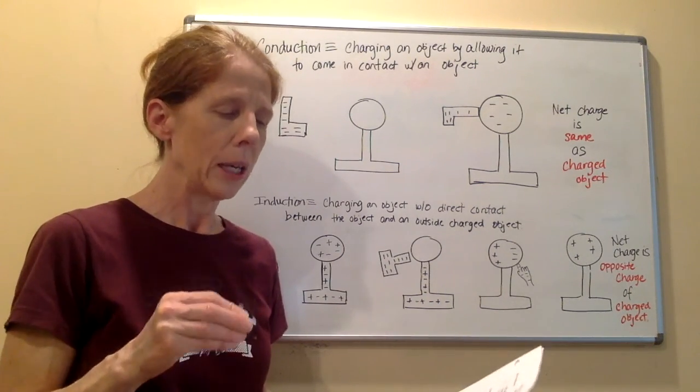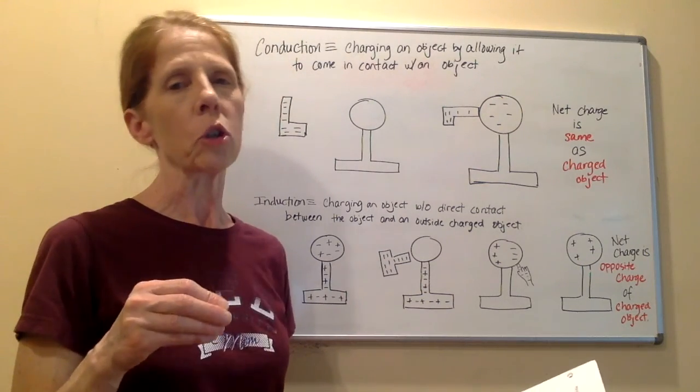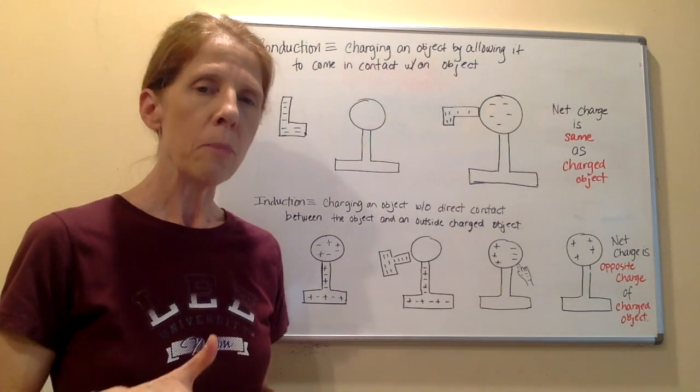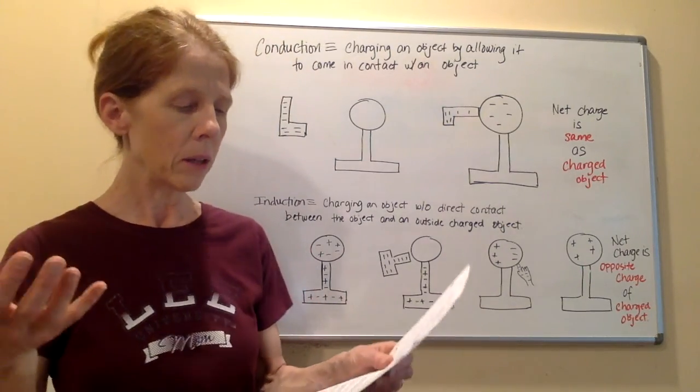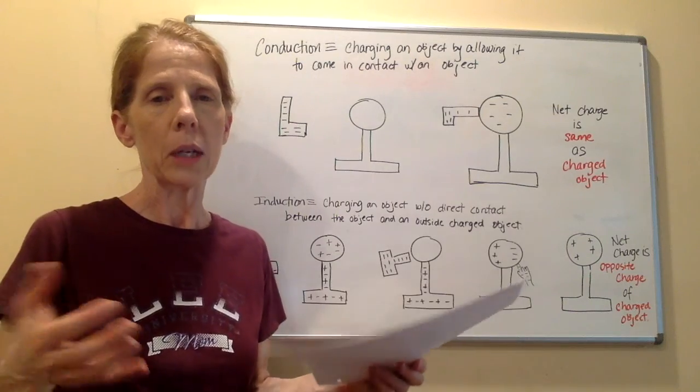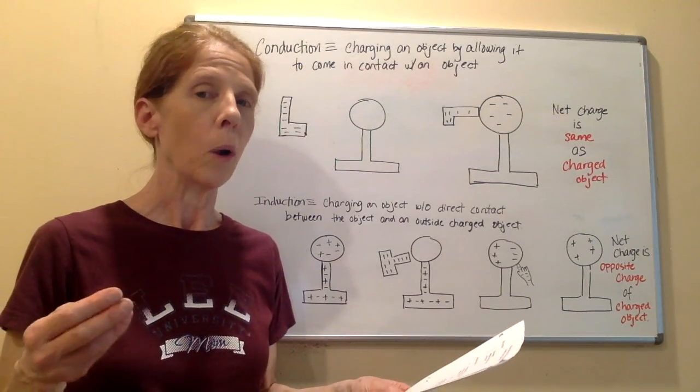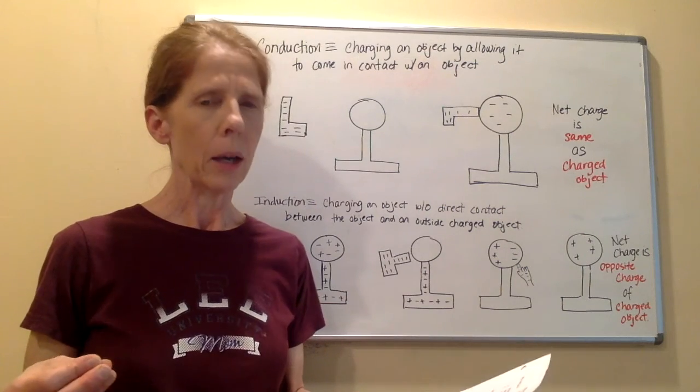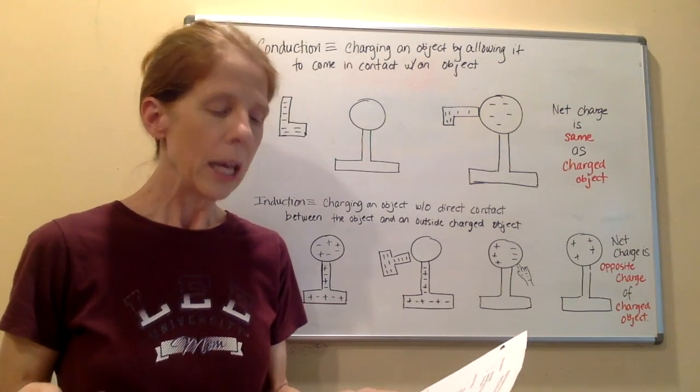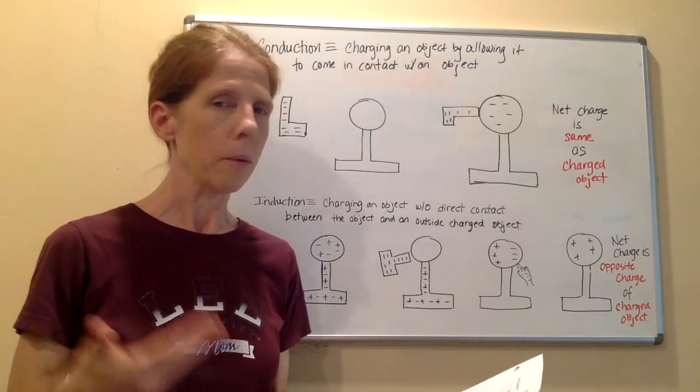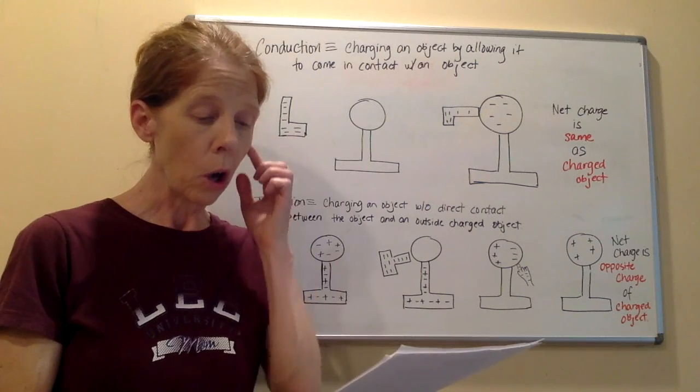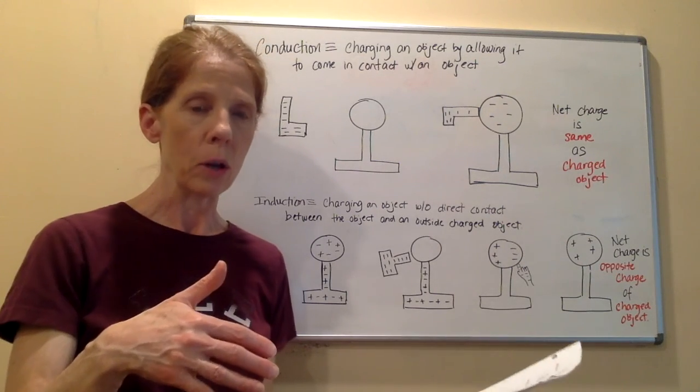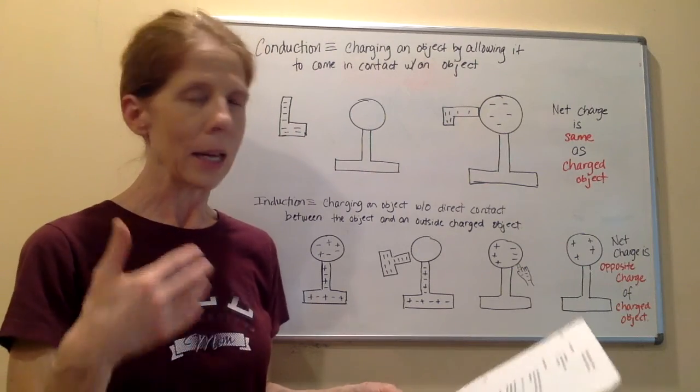Some things that you already know about charges is that the fundamental unit of negative electric charge is the electron, and the fundamental unit of positive electric charge is the proton. Most matter has no net charge because there's an equal number of positive and negative charges that balance each other out. Like charges repel, and opposite charges attract. An atom becomes electrostatically charged if it gains or loses electrons, and we call that an ion. If electrons are lost, it will have an abundance of positive charges. And if an atom gains electrons, then it will have an abundance of negative charges.